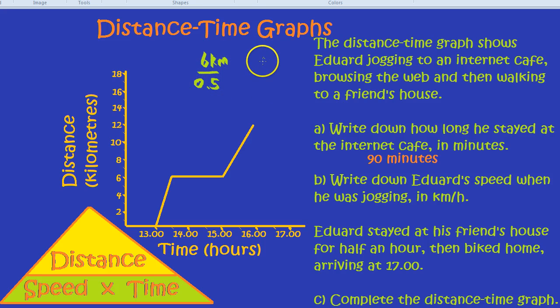Just to recap, we're looking for the speed. Write down Eduard's speed when he was jogging. We use our triangle, which we need to memorize, distance, speed, time. And we found out that speed equals distance divided by time. We worked out the distance was six kilometers, and we worked out the time was half an hour. We wrote a half instead of 30 minutes because we're keeping it in kilometers per hour. And 30 minutes is half an hour. Distance divided by time. So, 6 divided by 0.5.